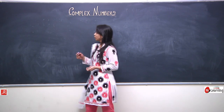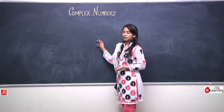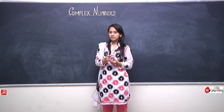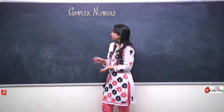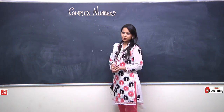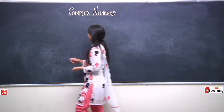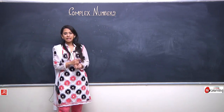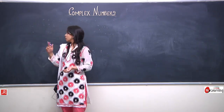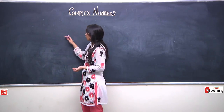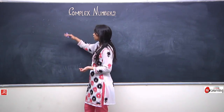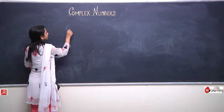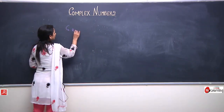Let us continue from where we left yesterday. What we found was that the integral number system was not sufficient to explain all problems in the real world. The integral number system was not closed for division — the quotient of two integers was not always an integer. In order to express the division of two integers, this led to the invention of the real number system.